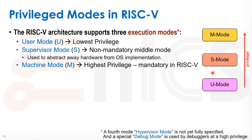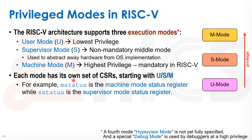In RISC-V there are three privileged modes. First, user mode, which is the lowest privilege — that's where all applications run. Then machine mode, which is the highest privilege and is mandatory in RISC-V, even in a bare metal machine. Machine mode has essentially no restrictions on how it can access anything in the system. RISC-V also introduces a middle mode — supervisor mode — which is the real kernel mode where the operating system usually resides. There are also two other modes: hypervisor mode, which is not yet fully specified, and a special debug mode used by debuggers.